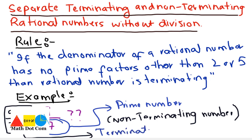So 2 and 5 are exempted — they give a terminating number. Keep in mind: first check the factors of the denominator. If the factors are 2 or 5, it will be terminating. If other than that, it will be non-terminating.